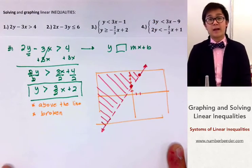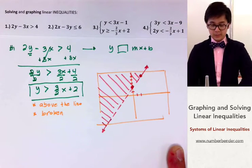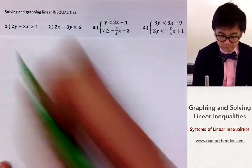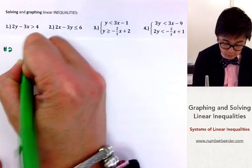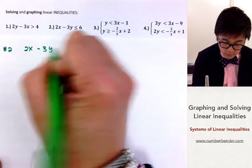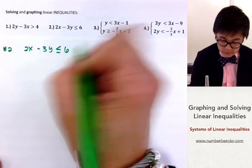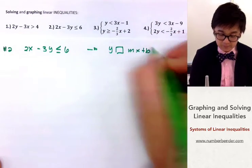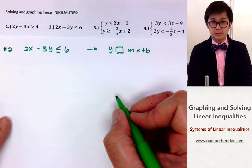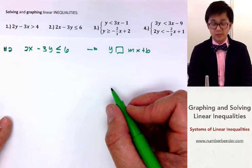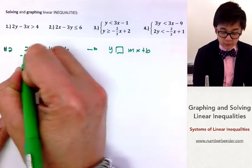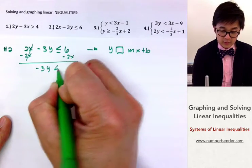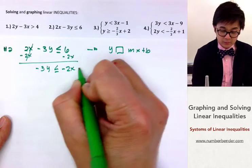This is now the graph of problem number 1. For problem number 2, we have 2x minus 3y less than or equal to 6. We change it into y inequality mx plus b form. We subtract 2x on both sides, leaving us with negative 3y less than or equal to negative 2x plus 6.